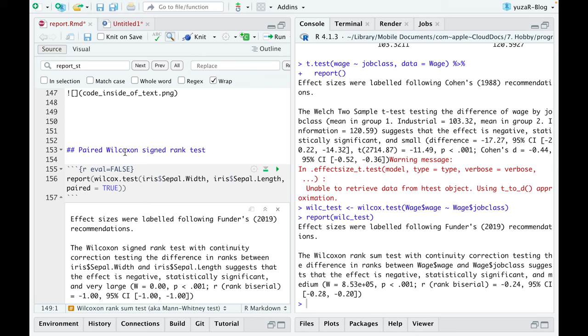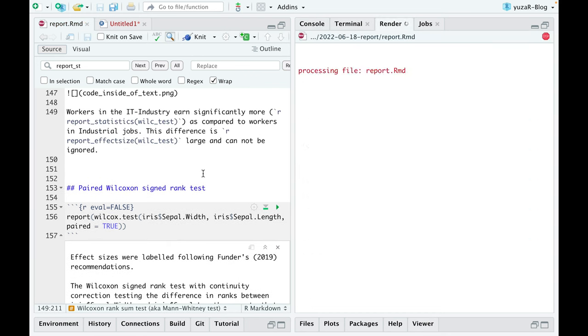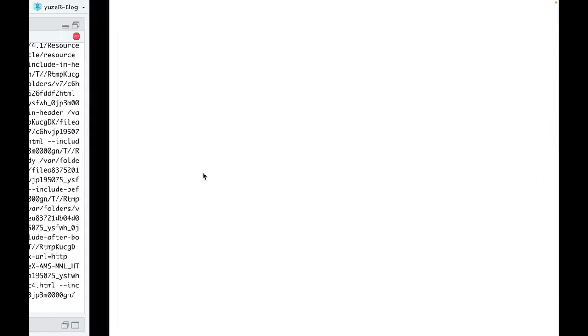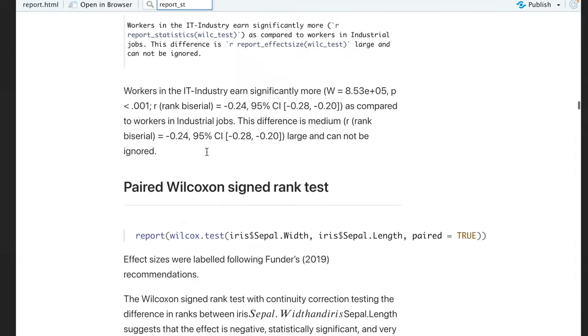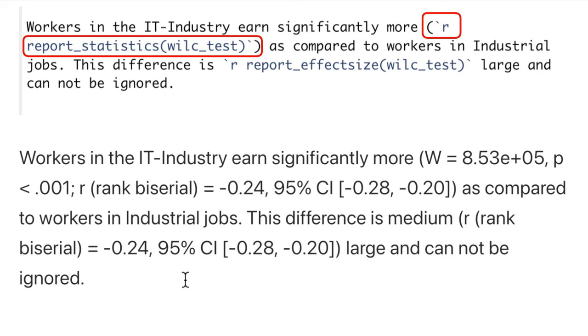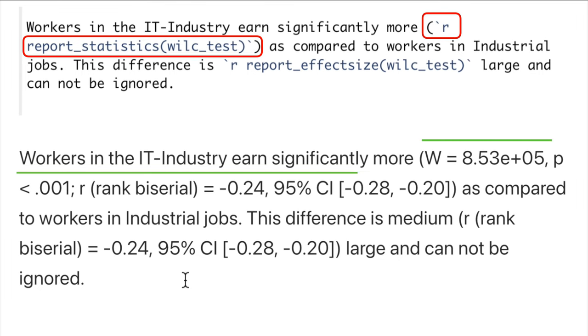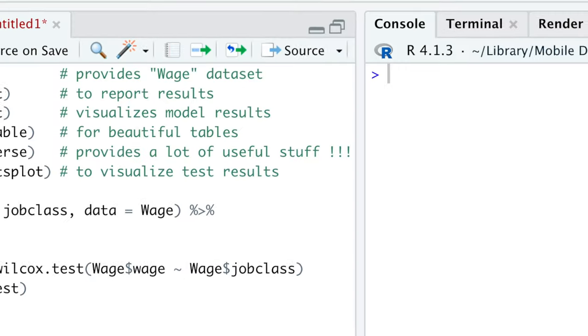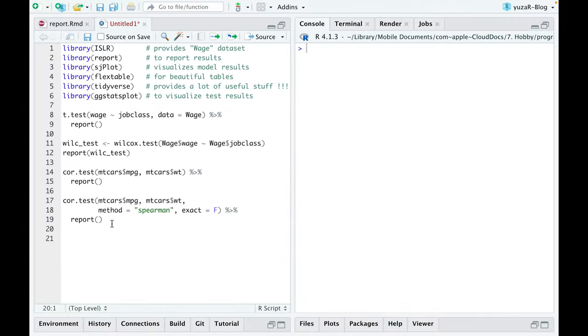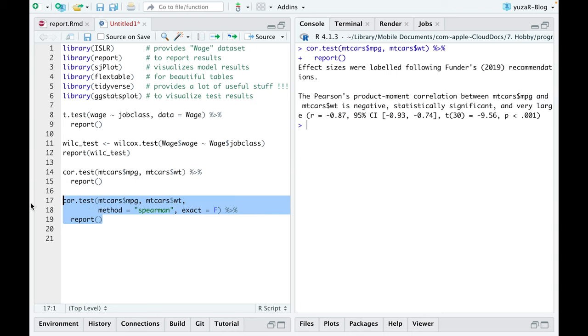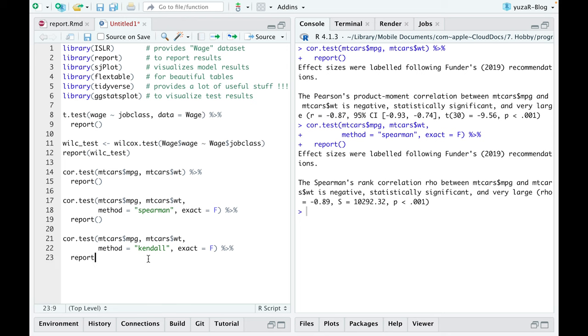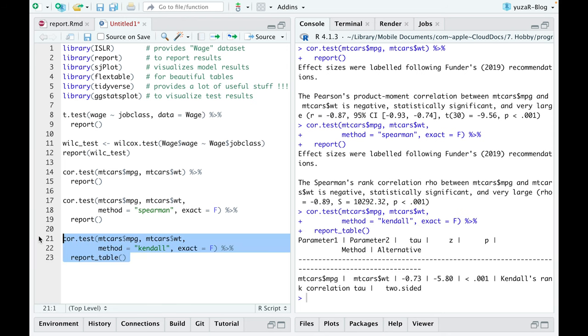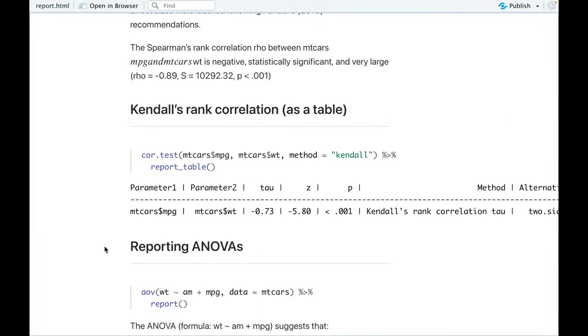By the way, we can easily integrate parts of the results into the text of our manuscript if we prepare our manuscript in RStudio. For instance, if we use report statistics function in the middle of the text, only numbers from our test will be incorporated into the text. The report effect size function would only report the effect size. Similarly, we can easily report the results of parametric Pearson or non-parametric Spearman or Kendall correlations. Besides, report table function allows you to display your result as a table instead of text.